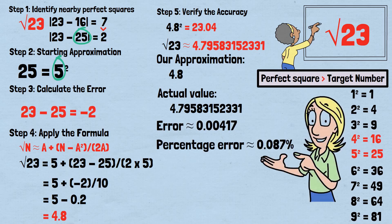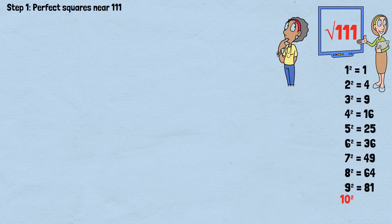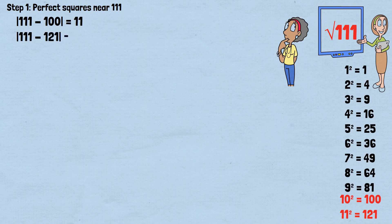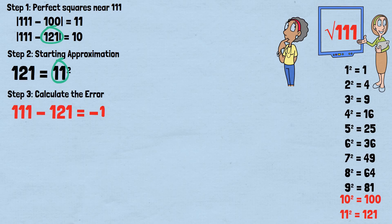Advanced example: finding the square root of 111. Step 1: perfect squares near 111 — 10²=100, 11²=121. Since |111−100|=11 and |111−121|=10, we use 121 as our closest perfect square. Step 2: starting approximation — since 121=11², our starting approximation is 11.